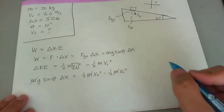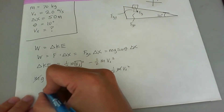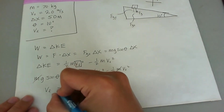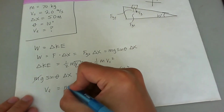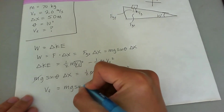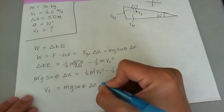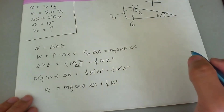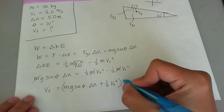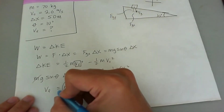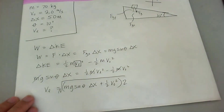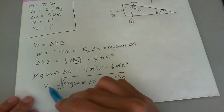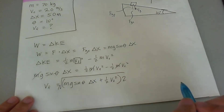First, all the m's cancel out. Solving for vf, we get vf equals the square root of the quantity 2 times g sine theta times delta x plus one-half v-naught squared, all multiplied by 2. It's a little messy, but that's how you solve for vf in one fell swoop.